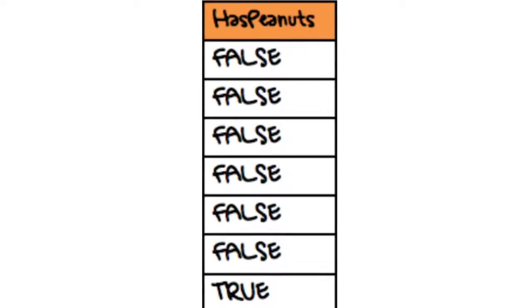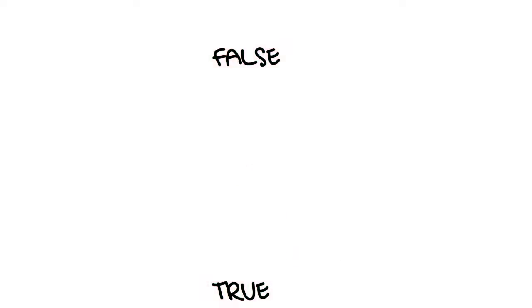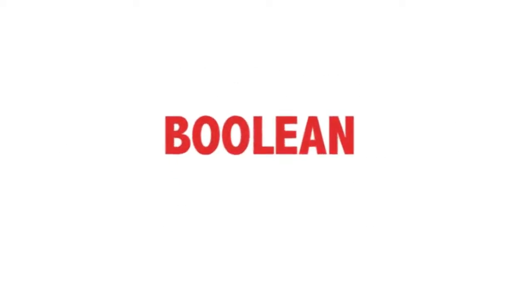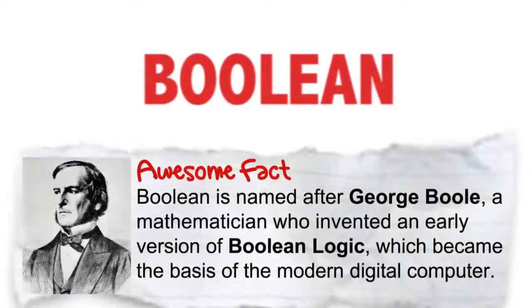There are only two possible values in this type of field. Fields that can only store true or false values are called Boolean fields. They have a field type of Boolean.